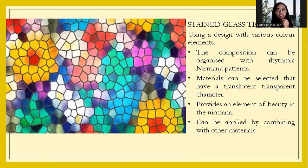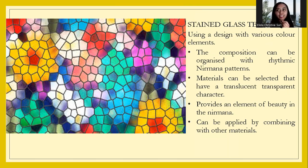Now, the stained glass technique. The technique uses design with various color elements. The composition can be organized with rhythmic patterns, and the material can be selected to have translucent or transparent properties — this is a key character of stained glass.